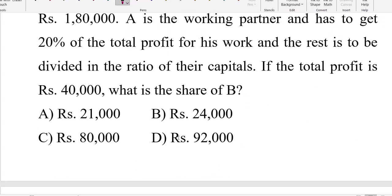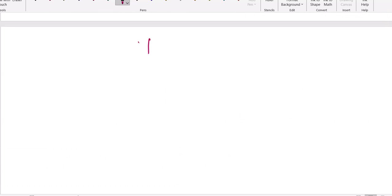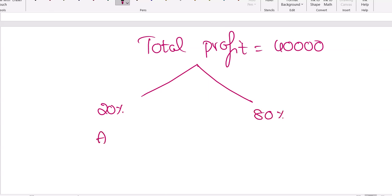So total profit 40,000 they are given. Total profit is 40,000. Among this, how much is given to A? Because of that managing business, 20% is given to A. Remaining 80% they will divide according to A and B profit share ratio. A investment is 60,000. B investment is 1,80,000. This is 1 and 3 ratio. If 1000 to A, 3000 should be given to B.